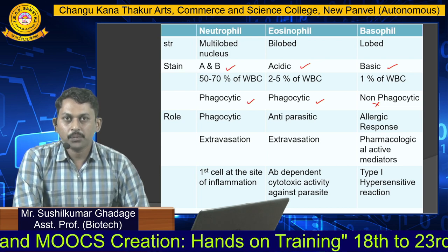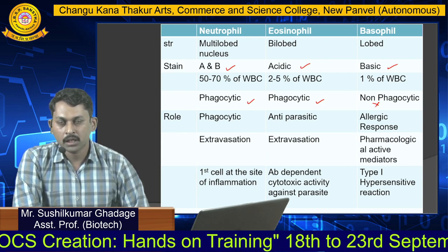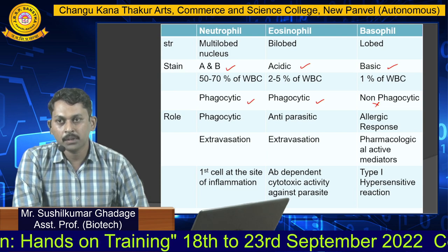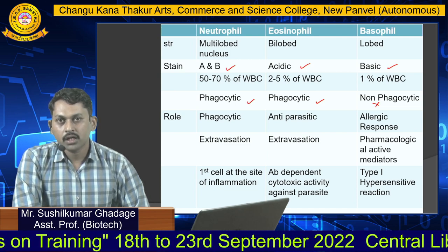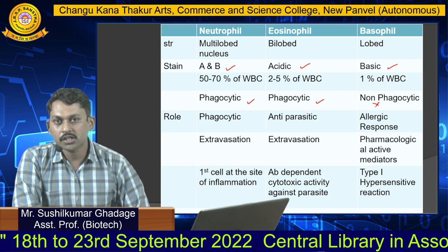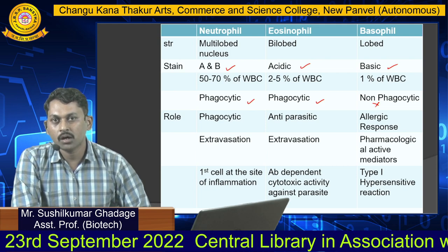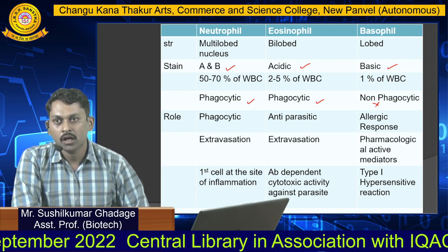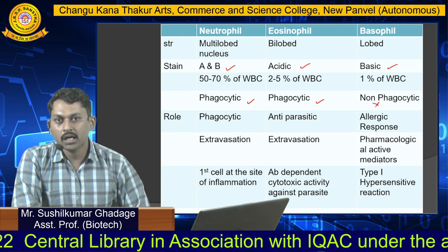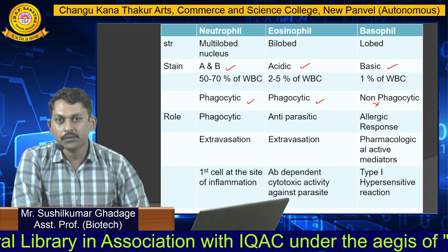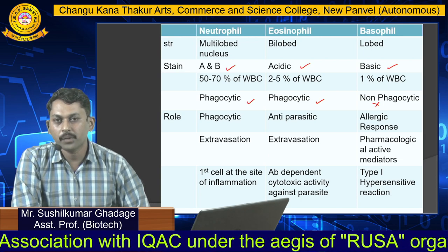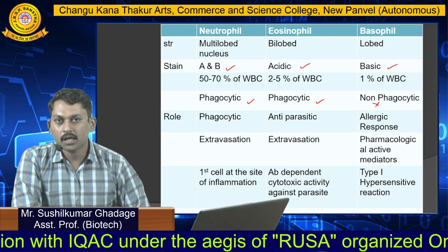The role of eosinophils is anti-parasitic in nature. In parasitic infections, their concentrations increase. They also show extravasation — entering from the blood circulatory system into tissue spaces — and show antibody-dependent cytotoxic activity against parasites. They also contain certain basic granules in their cytoplasm.